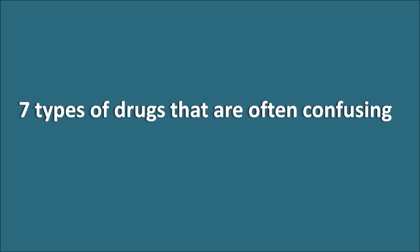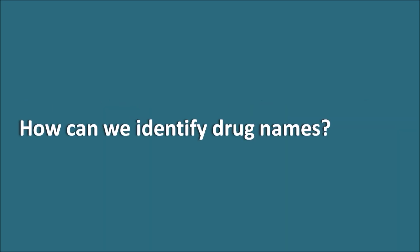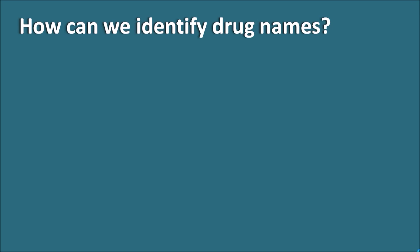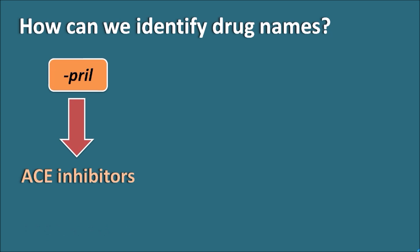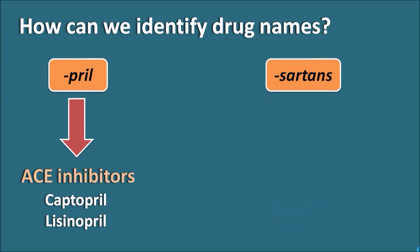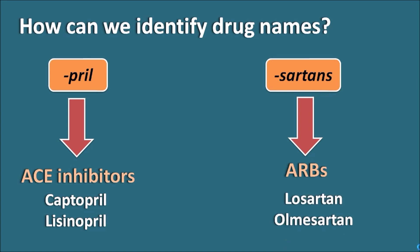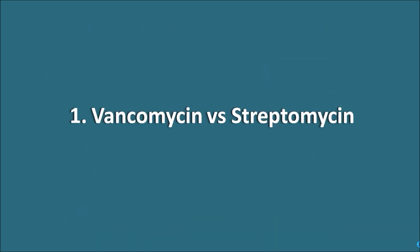Seven types of drugs that are often confusing — how can we identify drug names? Most of the time we can identify drug names by their suffix. For example, the suffix '-pril' indicates ACE inhibitors, such as captopril and lisinopril. Similarly, the suffix '-sartan' indicates angiotensin receptor blockers, such as losartan and olmesartan. However, some drugs have similar suffixes but belong to different categories, which can be confusing.